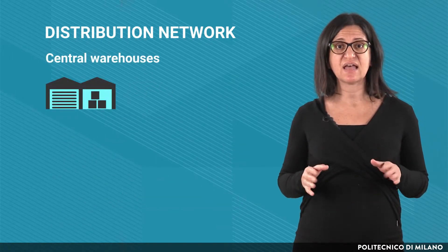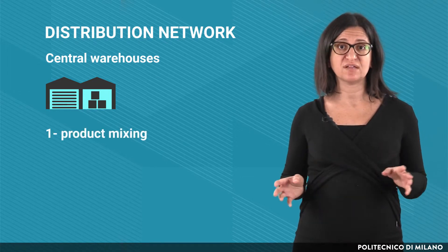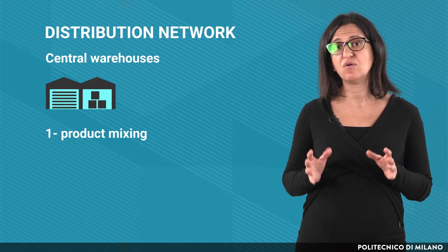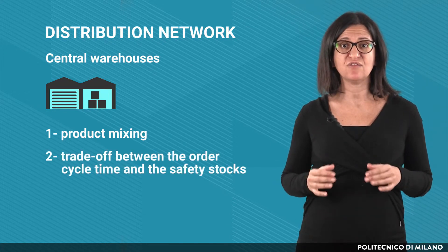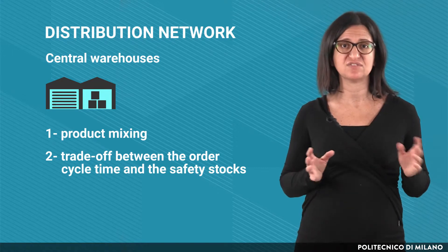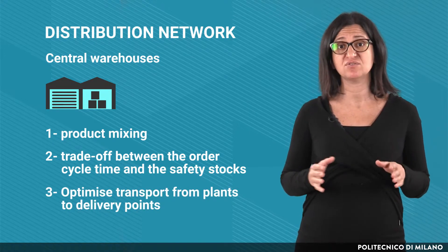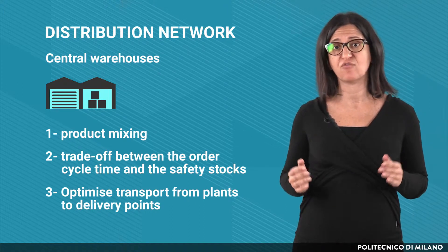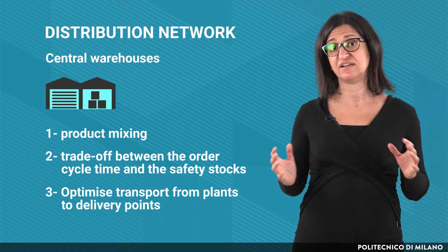Central warehouses have three main functions. First, they ensure product mixing, if suppliers only focus on a small part of the product range. Second, they face the trade-off between the order cycle time and the safety stocks. Third, they optimize transport from plants to delivery points, thanks to the reduction in the number of connections and ensuring increased truck utilization.